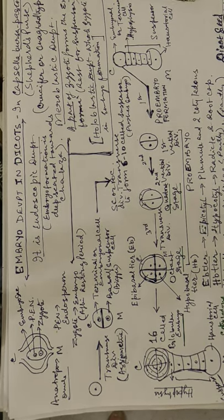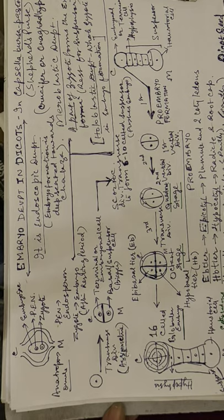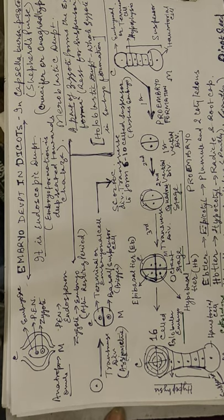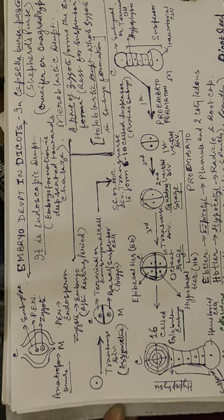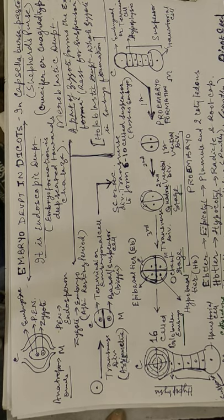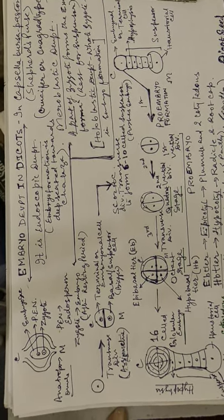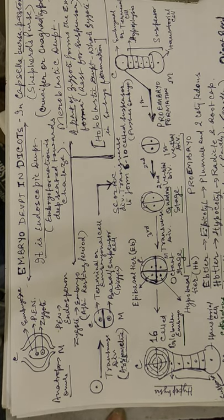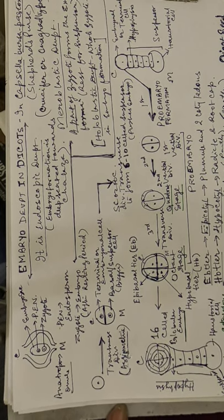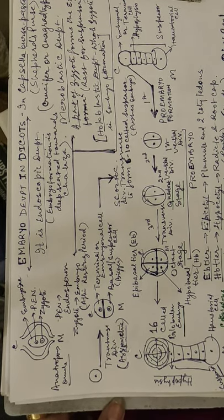There are also perispermic seeds, which are seeds where the nucellus is still retained in the seed. Normally the nucellus is consumed during embryo sac and female gametophyte development, but if it remains in the seed it is called perisperm. Perispermic seeds are found in black pepper and beetroot — these two examples are given in your NCERT. That's all for this topic; I'll cover monocot embryogeny soon.